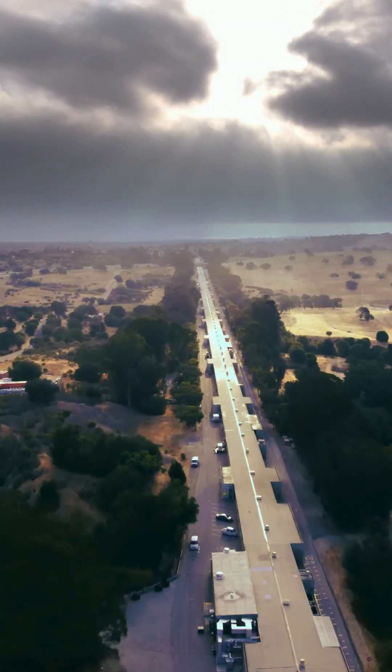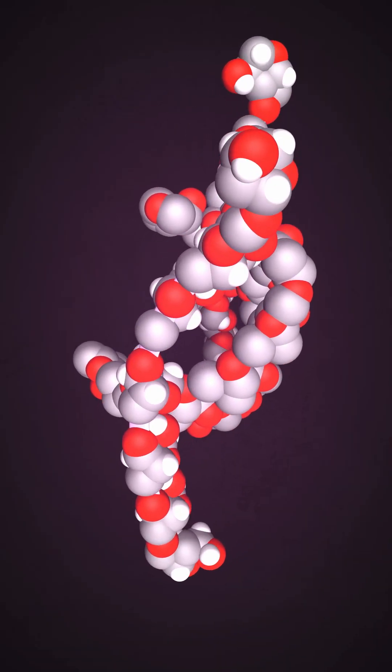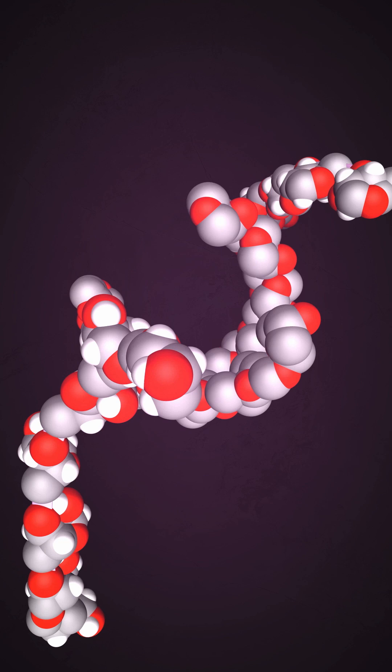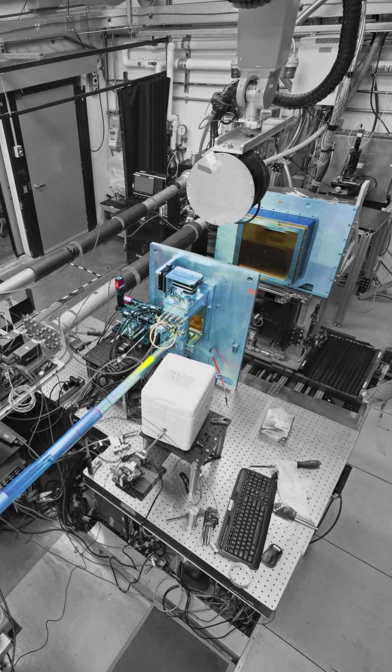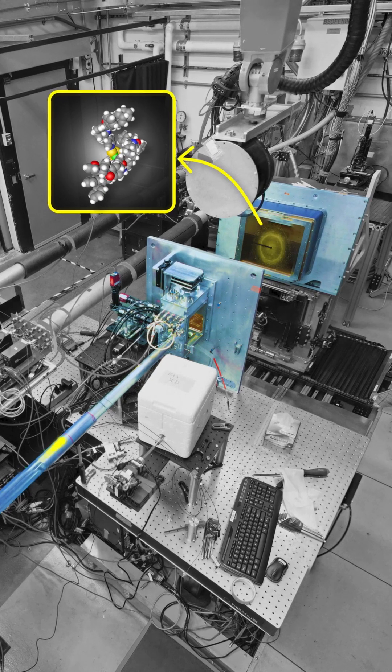XFELs produce incredibly intense and focused x-ray beams that are so bright they can capture atoms moving at ultra-fast speeds. An XFEL is basically like a super-fast camera that can take snapshots of lightning-fast events at these atomic scales.